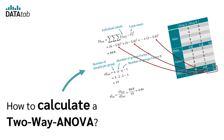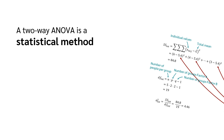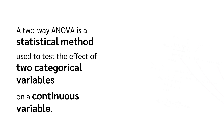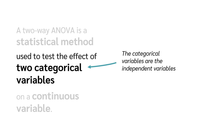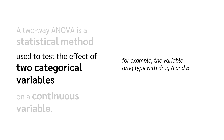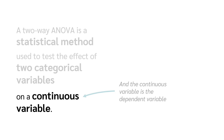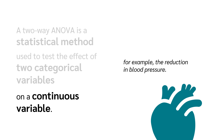How to calculate a two-way ANOVA. A two-way ANOVA is a statistical method used to test the effect of two categorical variables on a continuous variable. The categorical variables are the independent variables — for example, the variable drug type with drug A and B, and gender with female and male. And the continuous variable is the dependent variable — for example, the reduction in blood pressure.